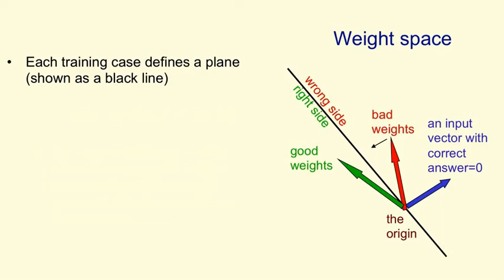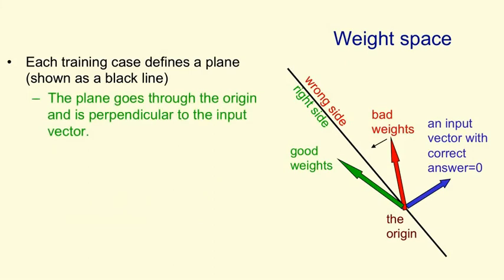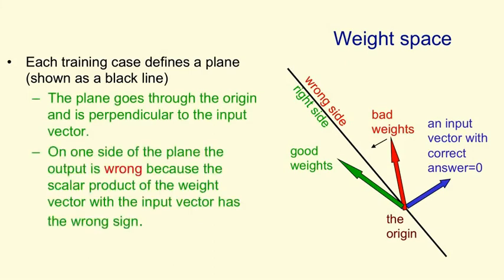Conversely, any input vectors on the other side of the plane will have an angle of greater than 90 degrees, and they will correctly give the answer of 0. So as before, the plane goes through the origin, it's perpendicular to the input vector, and on one side of the plane all the weight vectors are bad, and on the other side they're all good.